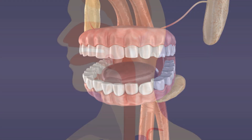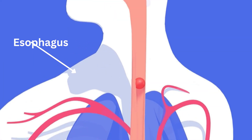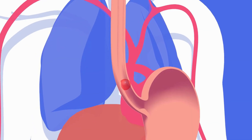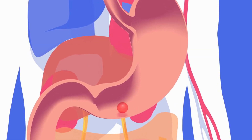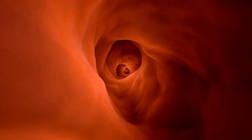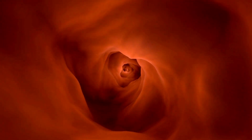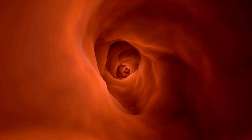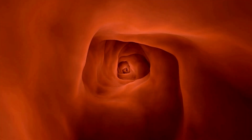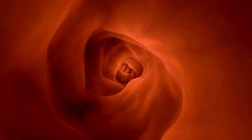After the mouth, the chewed food travels down the esophagus, a muscular tube that connects the mouth to the stomach. Its rhythmic contractions, known as peristalsis, propel the food toward the stomach, ensuring a smooth journey without any backflow.